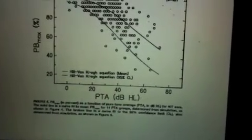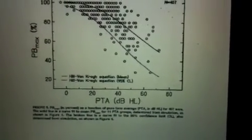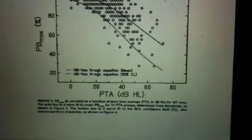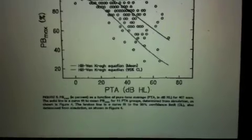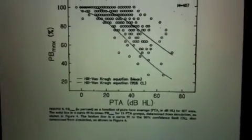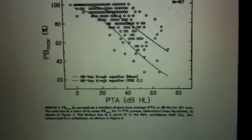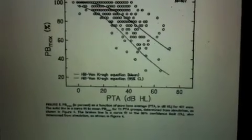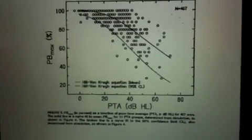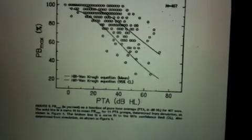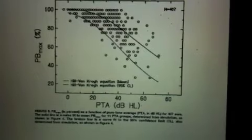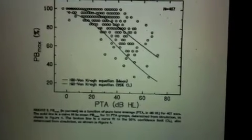Now, as you know, pure tone average is the average hearing loss at 500, 1,000, and 2,000 hertz. So it's not going to tell us as accurately, this figure will tell us as accurately if somebody has a precipitously sloping loss, or if somebody has a rising configuration. This figure is most useful for individuals who have a gradually sloping hearing loss, or more of a flat hearing loss.